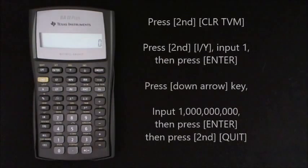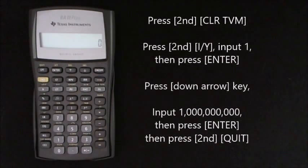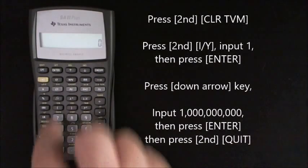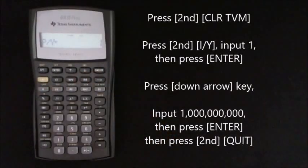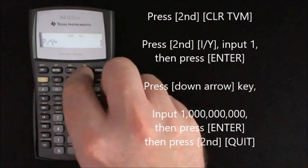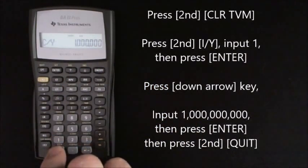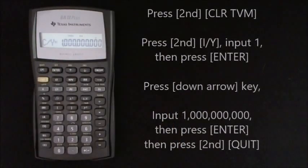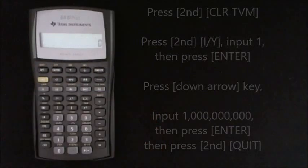And then you want to press second, and IY. And input the number 1, and enter, if it's not already there. And then press the down arrow, and enter 1, and then 9 zeros, and enter. And then second, and quit.